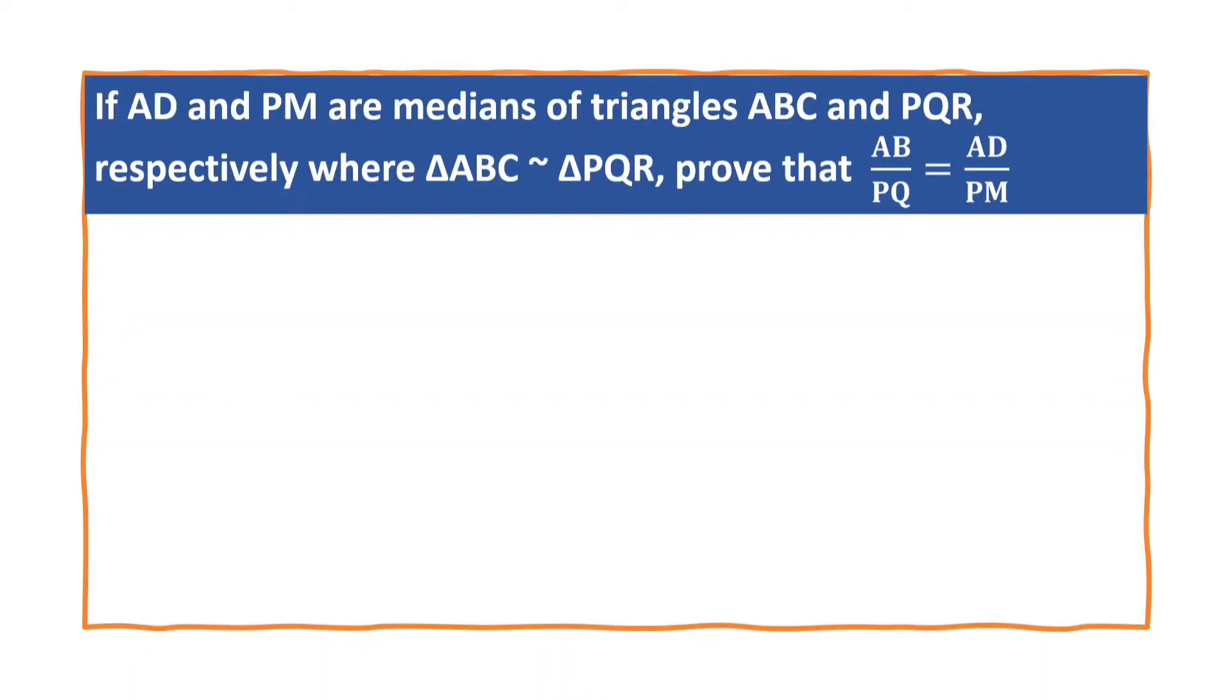If AD and PM are the medians of triangle ABC and PQR respectively, where triangle ABC is similar to triangle PQR, prove that AB by PQ is equal to AD by PM.